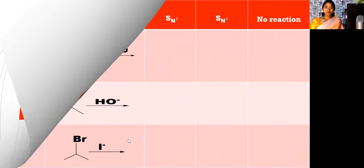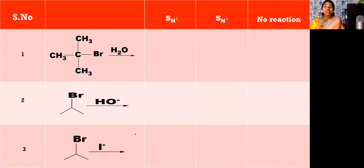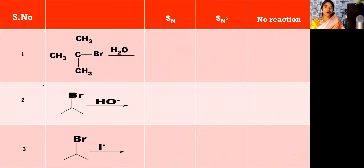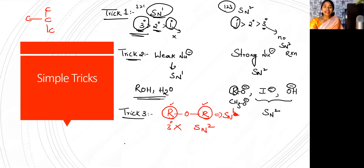Coming to trick number four: some halides won't involve in these reactions — neither SN1 nor SN2. Trick number four is you have to check whether any bridged halogen is present or not. If any bridged halides are there, there is no SN1 or no SN2 — there is no reaction.